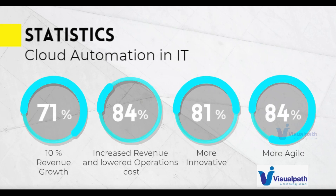Automation is not just a cool thing to do — it really adds business value. More than 70% of IT companies say they are seeing 10% more revenue growth. 84% say they have really lowered their operations costs. 81% say they have become more innovative — which is very important, because when you hand over your work to a tool or machine, you have more time to find innovative solutions. 84% of IT organizations say they have become more agile, which is the need of the hour.